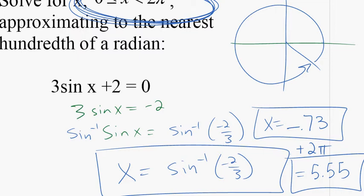5.5 what? These angles are coterminal. They have the same terminal ray. The difference is this one's within our range. This one's not. Any questions about using the inverse function?